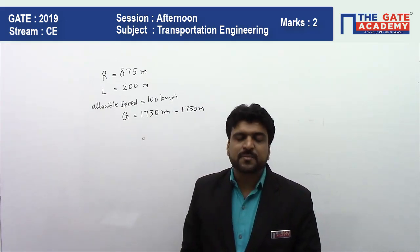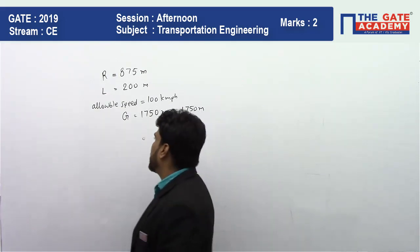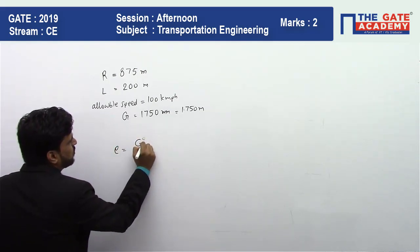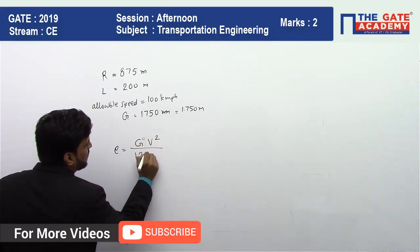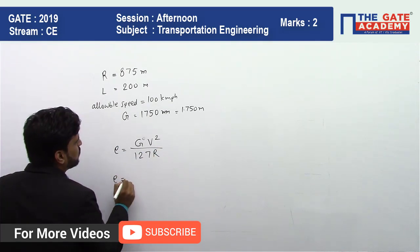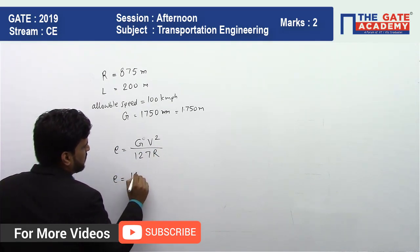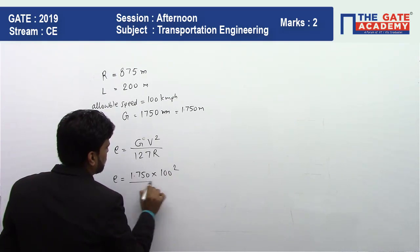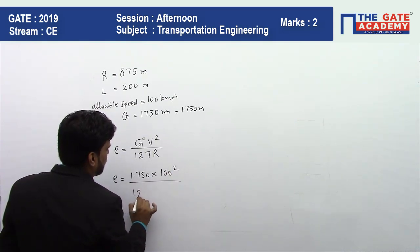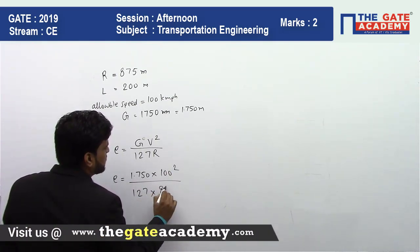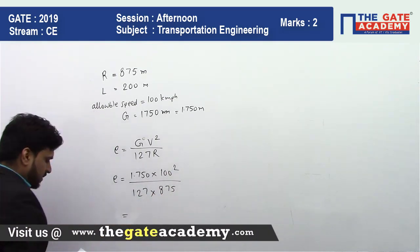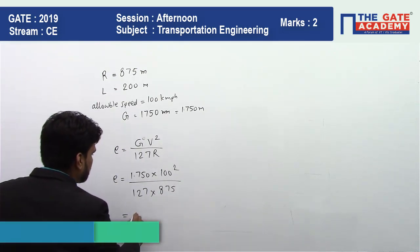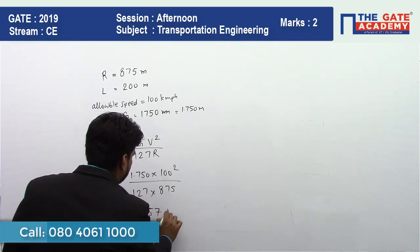The maximum permissible cant will simply be: E = GV² / 127R. So E = 1.750 × 100² / (127 × 875). If you solve this equation, you will find 0.157 meters.